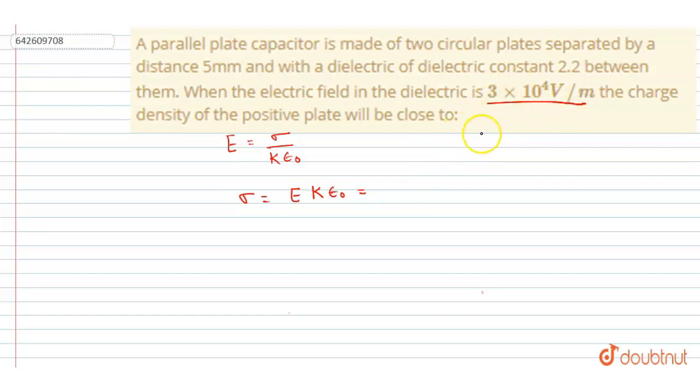know the value of epsilon naught is 8.85 × 10^-8 in SI unit, right? So just put the values here. The dielectric constant is also given as 2.2, so we will multiply that